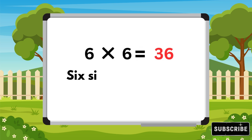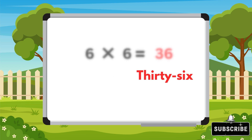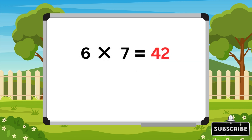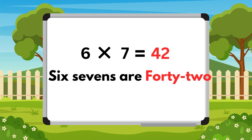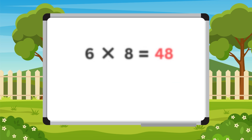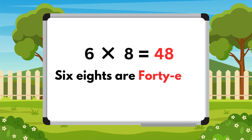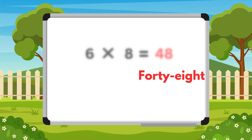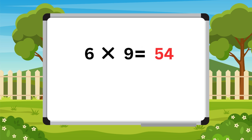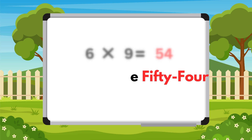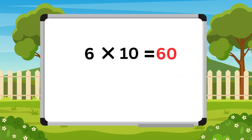Six six are thirty-six. Six sevens are forty-two. Six nines are fifty-four. Six tens are sixty.